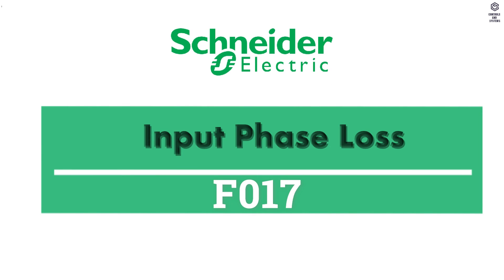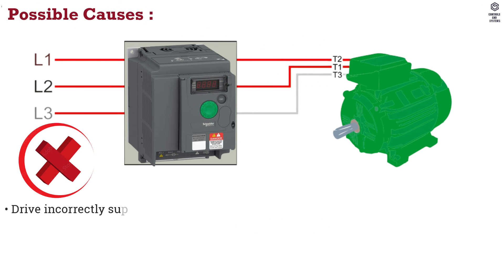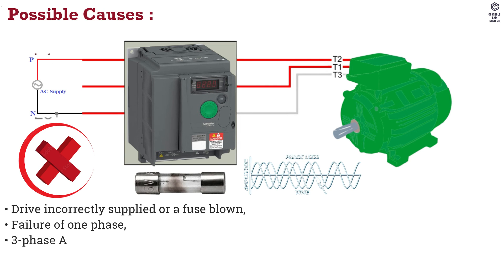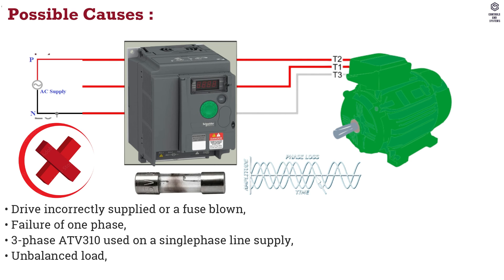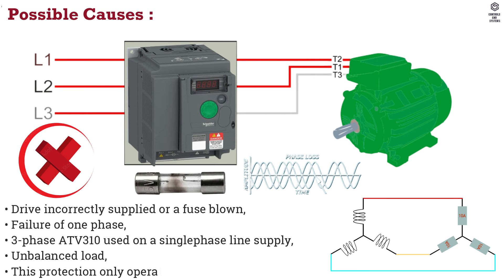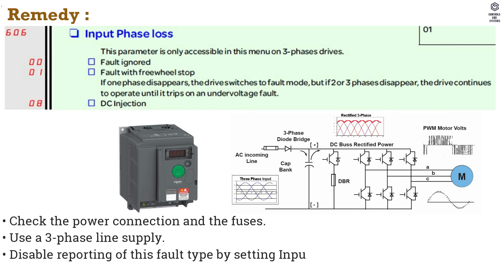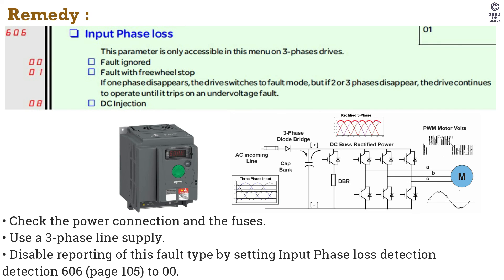F017 Input Phase Loss. Possible Causes: Drive Incorrectly Supplied or Fuse Blown. Failure of 1 Phase. 3 Phase ATV310 Used on a Single Phase Line Supply. Unbalanced Load. This Protection Only Operates with the Drive On Load. Remedy: Check the Power Connection and the Fuses. Use a 3 Phase Line Supply. Disable Reporting of this Fault Type by Setting Input Phase Loss Detection.